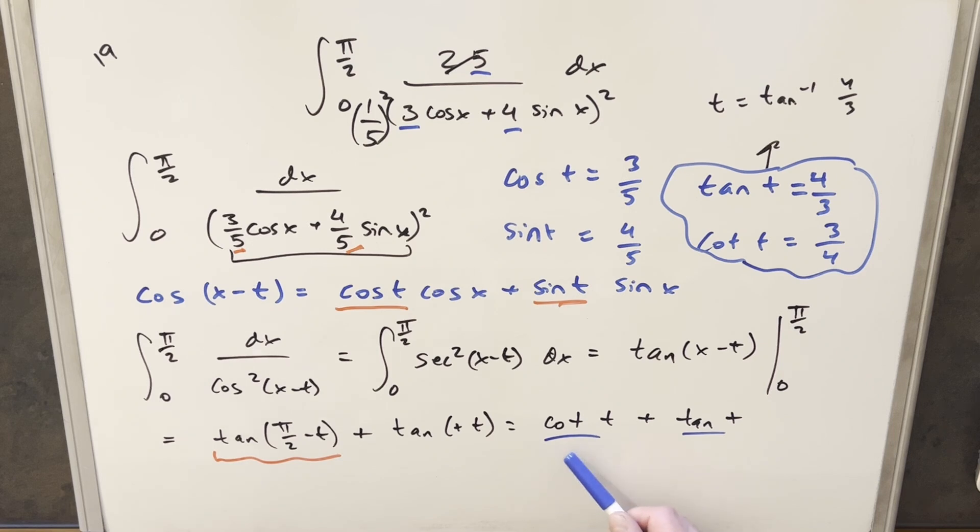But we already found our values of cotangent of t and tangent of t earlier on when we were working with this formula. So all we need to do is plug in, and this is just going to be 3 over 4 plus 4 over 3. We can get a common denominator and write this as 9 plus 16 over 12, or just 25 over 12.